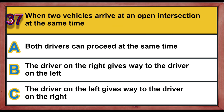Question 37. When two vehicles arrive at an open intersection at the same time: A. Both drivers can proceed at the same time. B. The driver on the right gives way to the driver on the left. C. The driver on the left gives way to the driver on the right.